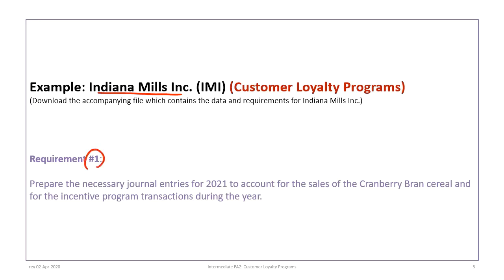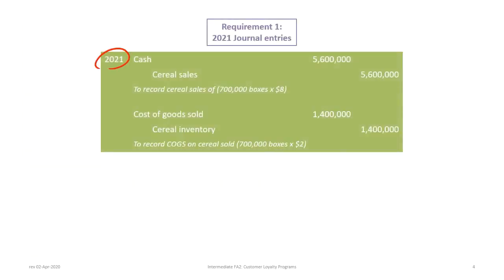We will look at the first requirement, which is to prepare the necessary journal entries to account for the sales of the cranberry brand cereal and for the incentive program during the year. Let's begin.